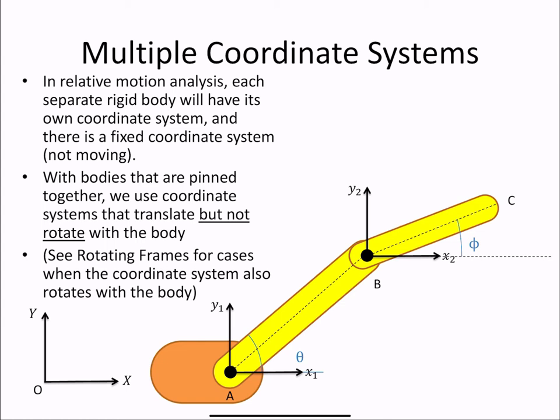When we have single rigid bodies, or bodies that are pinned together, we can use coordinate systems that translate but do not rotate with the rigid body. That simplifies our expressions. We'll see later, in rotating frames, there are cases where our coordinate system also has to rotate with the body.